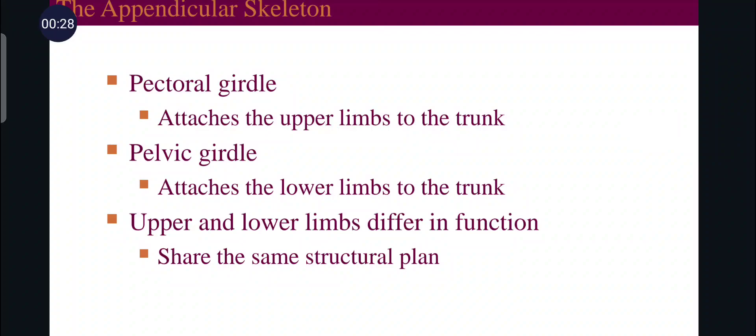The pectoral girdle attaches the upper limbs to the trunk, while the pelvic girdle attaches the lower limbs to the trunk. Upper and lower limbs differ in their functions.